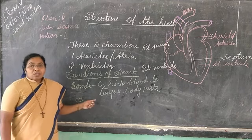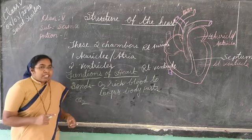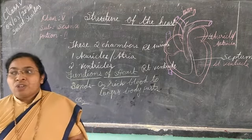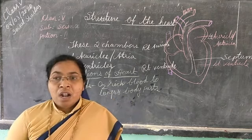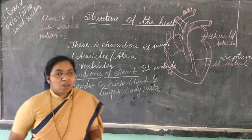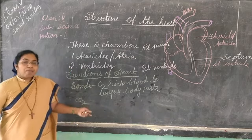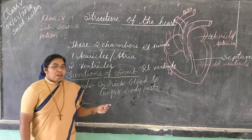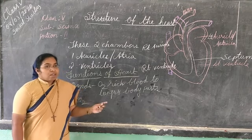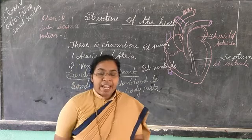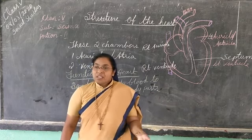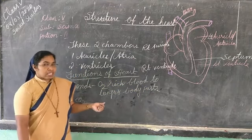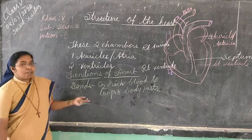The movement of blood through the arteries and the body parts is called circulation. In our body there are blood vessels. Blood vessels are nothing but arteries, veins, and capillaries. In the next class we will learn about the blood vessels.